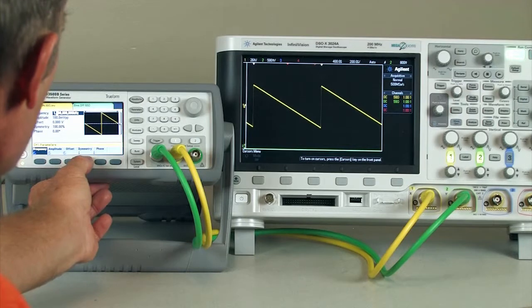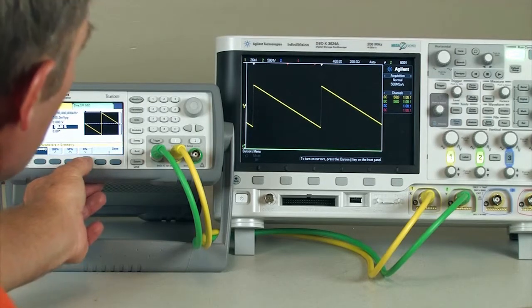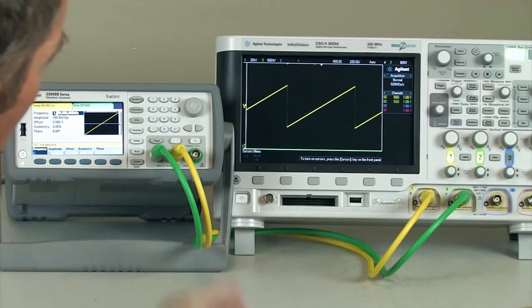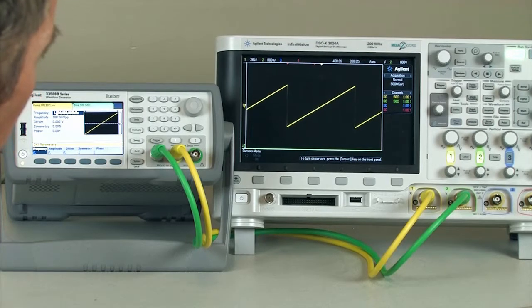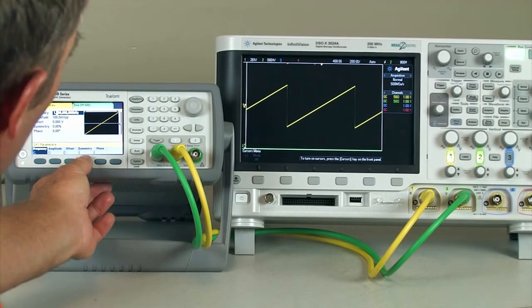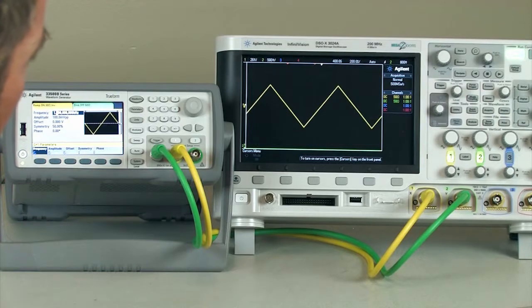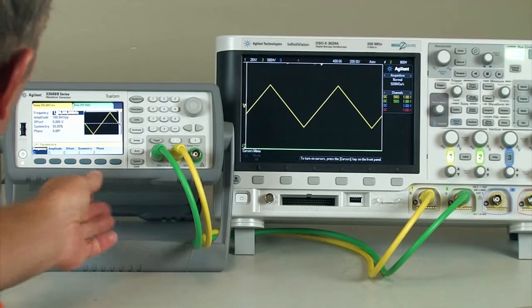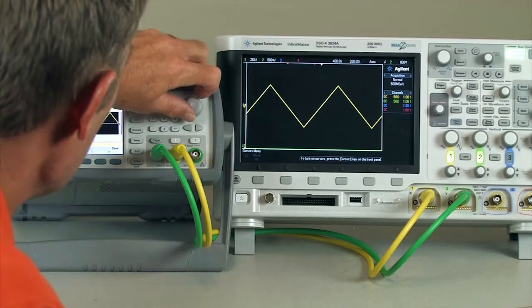We can go ahead and change our symmetry. We can change it to 0%, and now we have a positive slope waveform, and we can change that to 50%, and we have our triangle waveform. And of course, we can change it to anything in between as well.